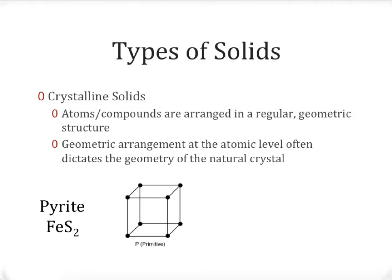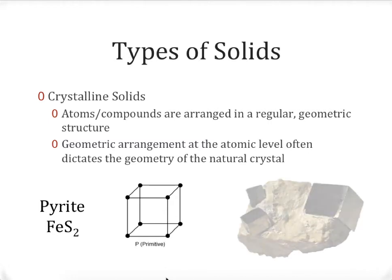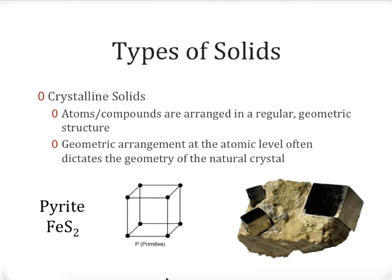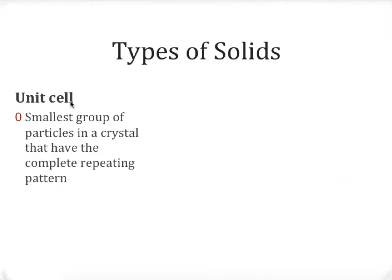An excellent example of this is pyrite, often known as fool's gold. It has a simple cubic or primitive cubic structure — the atoms arrange themselves in this cubic pattern. As a result, the large-scale structure of pyrite has a cubic shape, which matches the pattern the individual atoms form when grouped together. These individual groupings of atoms are referred to as unit cells — the smallest group of particles in a crystal that have the complete repeating pattern. The unit cell is the smallest group of atoms that still retains that individual shape.